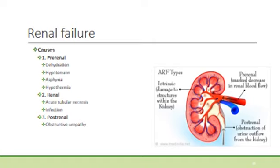Many disease processes can lead to acute renal failure or acute kidney injury. The causes are mainly in three groups: pre-renal, renal, and post-renal. The most common group is pre-renal, associated with poor perfusion of the kidneys due to dehydration, hypotension as found in shock, asphyxia, and hypothermia. Renal causes are usually intrinsic, with damage to the kidney itself due to acute tubular necrosis and infection. Post-renal causes may include obstructive uropathy.